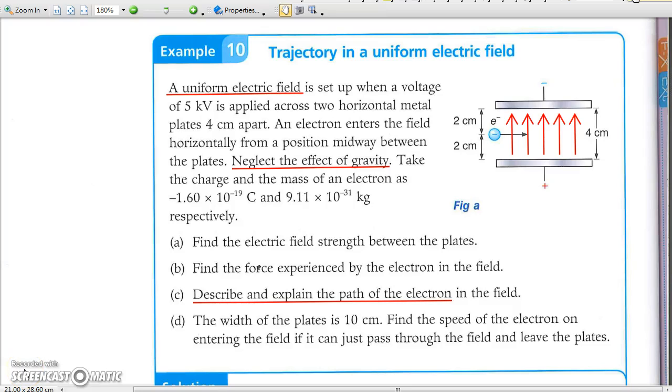In Example 10, the projectile motion of an electron inside a vertical uniform electric field is investigated. Note that its mass of electron is exceptionally small. The gravitational attraction on it, which means its weight, is neglected.